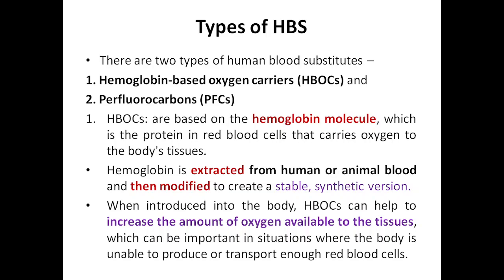If you want to synthesize a synthetic blood substitute, you extract hemoglobin first from human or animal blood, then you modify it to create a stable and synthetic portion. That is why we call it a synthetic blood substitute. When introduced inside the body, this particular blood substitute can help increase the amount of oxygen available to the tissues.